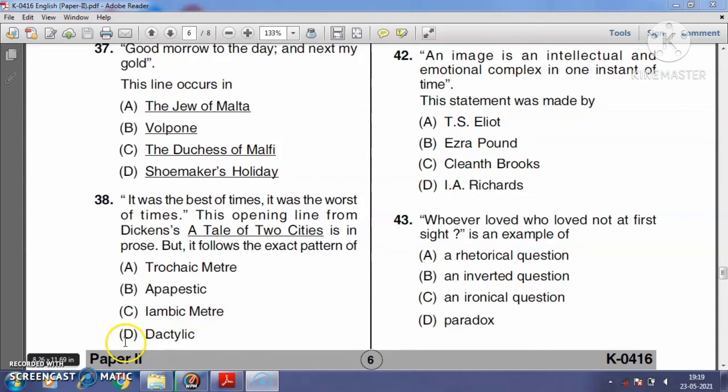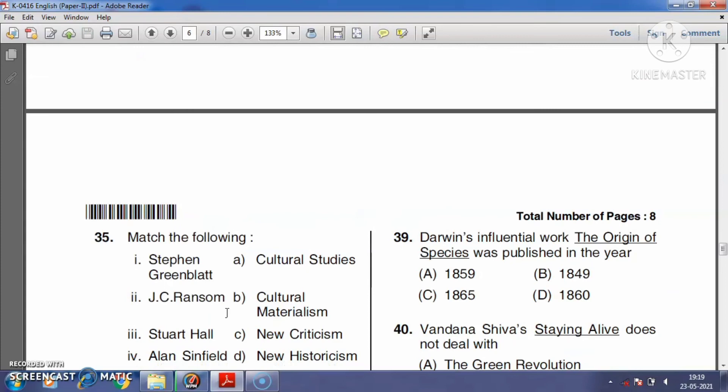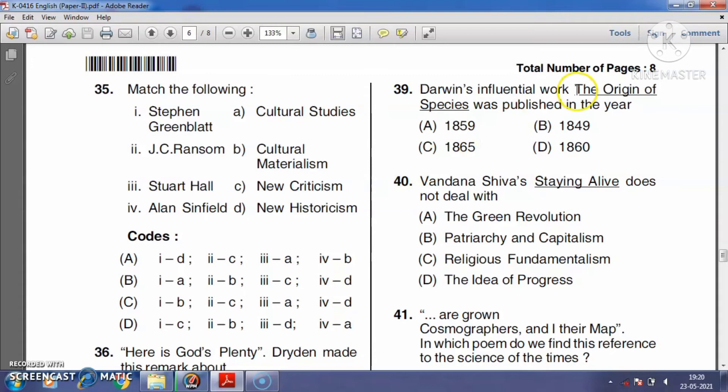Question number thirty-nine: Darwin's influential work The Origin of Species was published in the year 1859, 1849, 1865, or 1860? On the Origin of Species is a book by Charles Darwin, published in 1859. It is a work of scientific literature. The author introduced the scientific theory that populations evolve over the course of generations through the process of natural selection. The right answer is option A, 1859.